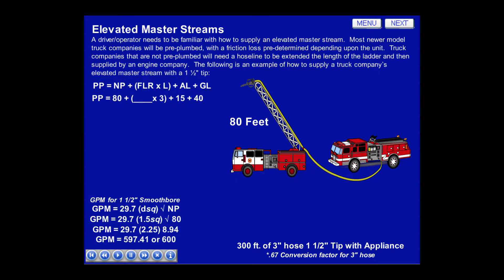To determine the friction loss rate for the 3-inch hose, first we must determine the GPM that flows through the inch and a half smoothbore tip. We'll use the formula: GPM equals 29.7 times diameter squared times the square root of the nozzle pressure. Therefore, GPM equals 29.7 times 1.5 squared times the square root of 80, which equals 29.7 times 2.25 times 8.94, or 597.41 — rounded simply to 600 GPM.